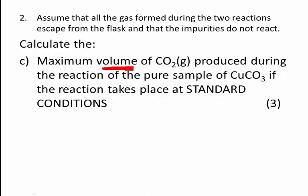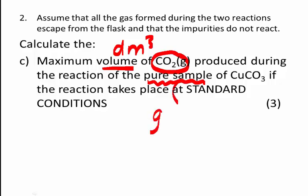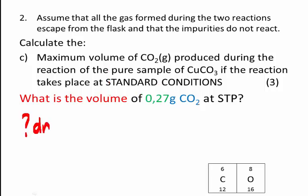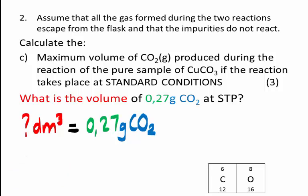Next question: calculate the maximum volume in decimetres cubed of the carbon dioxide produced during the reaction of the pure sample. We've already seen that the mass of CO₂ is 0.27 grams. So we simply have to ask: what is the volume of this mass of carbon dioxide that we read off the graph? How many decimetres cubed is the volume of 0.27 grams of carbon dioxide?